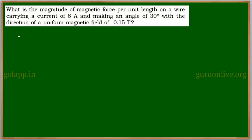See this problem: What is the magnitude of magnetic force per unit length on a wire carrying a current of 8 amperes and making an angle of 30 degrees with the direction of a uniform magnetic field of 0.15 tesla?